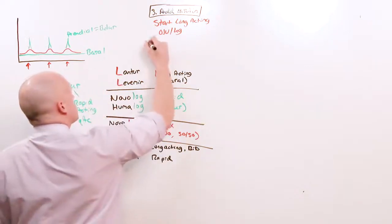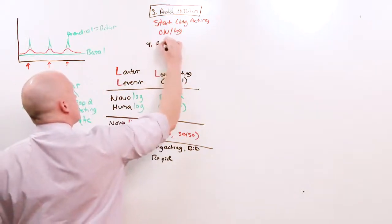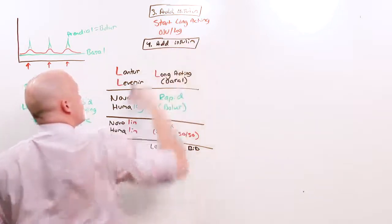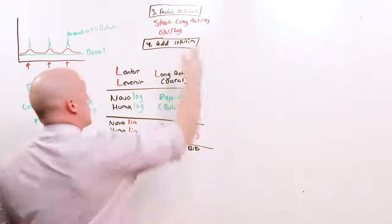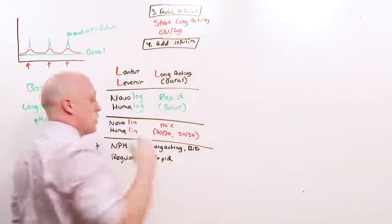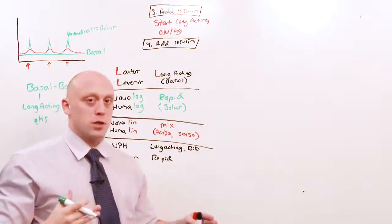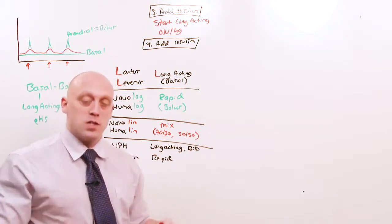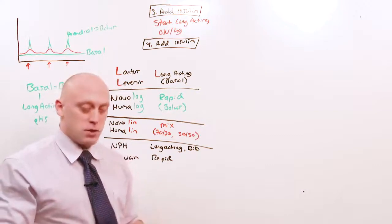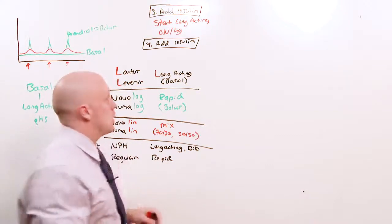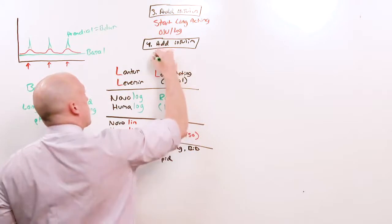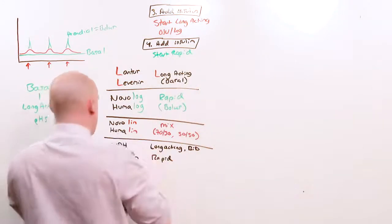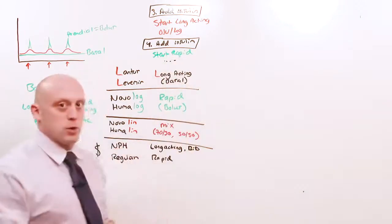If you're still not at A1c goal, you add another insulin. Remember, you titrate this long-acting starting at 0.1 units per kg. Keep going up until that morning sugar is at goal or until you reach about 15 units. If the A1c is still not at goal, it means that you have to start an insulin at another meal time. So you pick the biggest meal time, and you start a rapid. And this process continues until they're basal bolus.